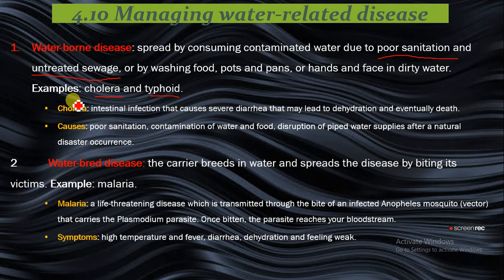Cholera is an intestinal infection that causes severe diarrhea that may lead to dehydration and eventual death. It is caused by a bacteria called Vibrio cholerae that attaches itself to the wall of the small intestine, particularly at the ileum. It produces a toxin that causes the release of chloride ions from the wall of the intestine into the gut, causing osmotic movement of water out of the cells of the lumen of the small intestine.